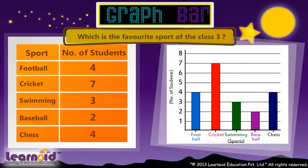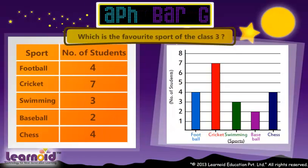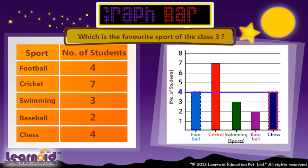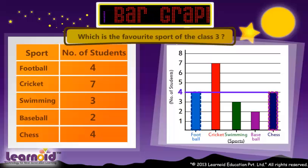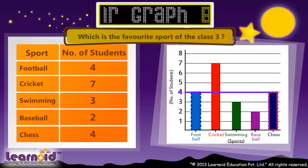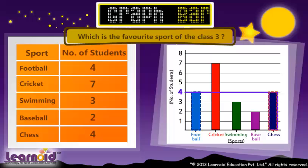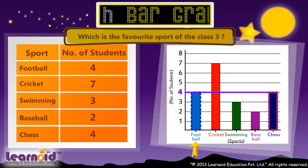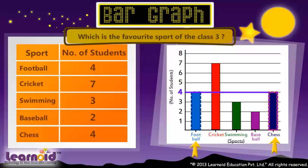Which two sports are played equally by students? On seeing the Bar Graph, we found two bars are of equal height — for football and chess.